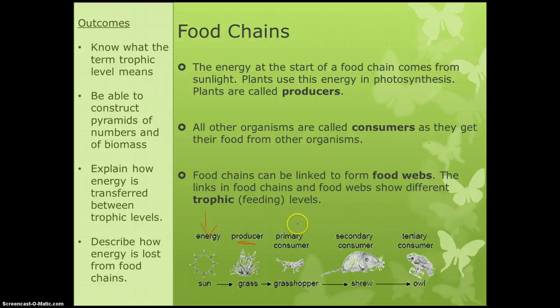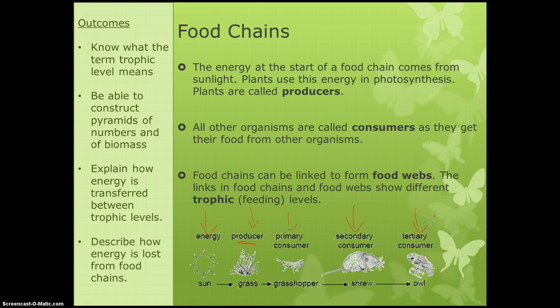These can be just simple chains like this one, or they can be webs. For instance, grasshoppers will get eaten by more than one creature, and grass absolutely gets eaten by more than one creature, so they get a bit more complicated — but they're all basically the same thing. We can talk about them as being trophic levels. After we go past the sun we get our producer, which will be our first trophic level, then our second, third, and fourth trophic level. It's just telling us how far along the chain we are of things being eaten.